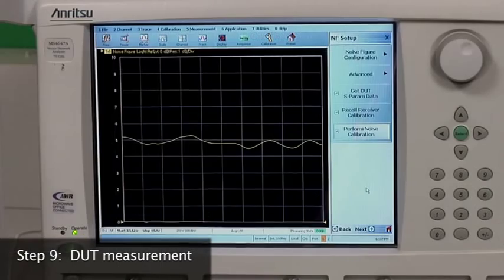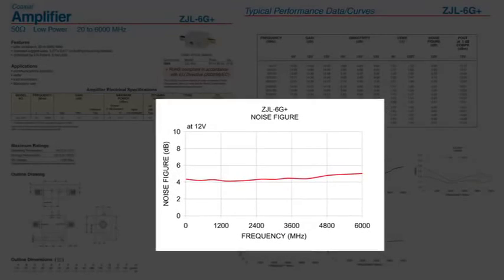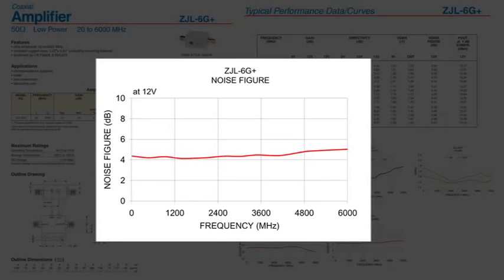We insert the DUT and here is our noise figure measurement. As a sanity check, we compare the data with the manufacturer's data and see that the amplifier is behaving as expected.